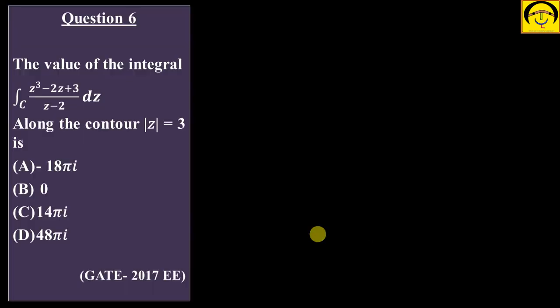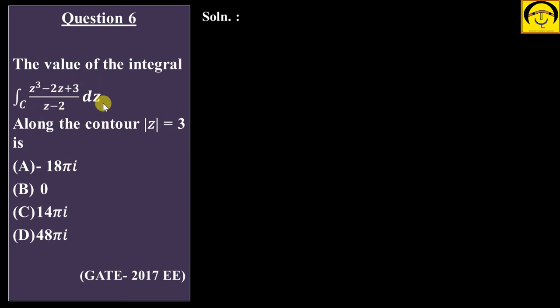Let's look at Question 6, which appeared in Electrical Engineering GATE 2017. We need to find the value of the integral along the contour |z| = 3. The options are: −18πi, 0, 14πi, or 48πi. First, look at the integral carefully. This is the function f(z) which is everywhere analytic except at z equal to 2 — because z equal to 2 falls within this contour.